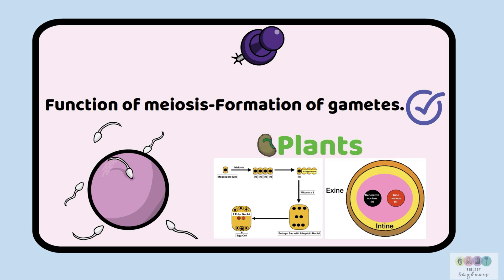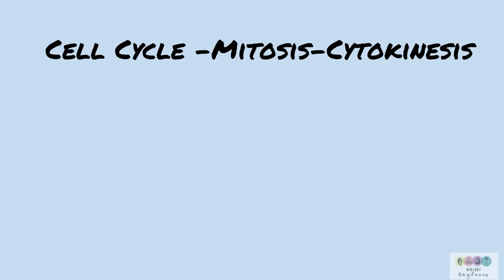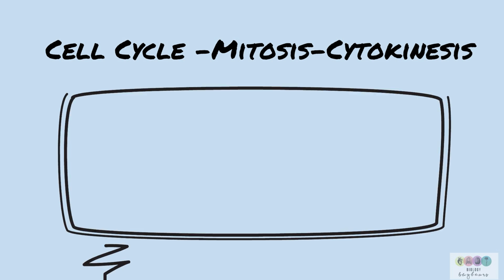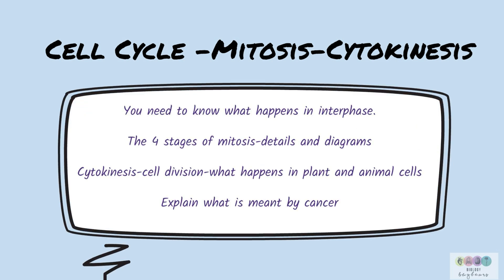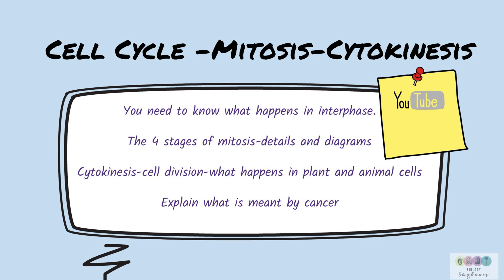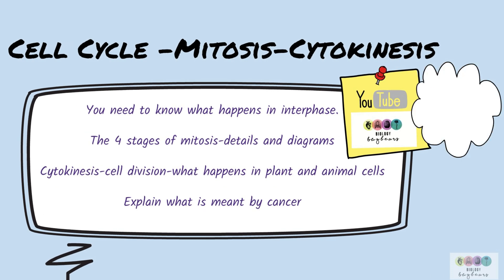We've compared mitosis and meiosis very briefly. Now you need to study the whole topic of cell division in its entirety — what happens in interphase, the four stages of mitosis with diagrams and details, what happens in cytokinesis, and what is meant by cancer. Go back to the main page, Biology Book Bears, where you'll find a playlist on cell division with detailed videos and exam questions covered as well. The very best of luck.